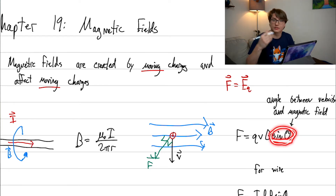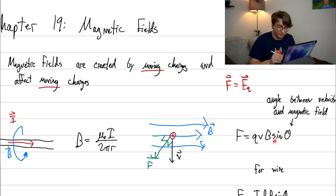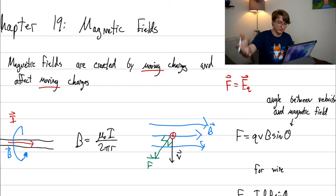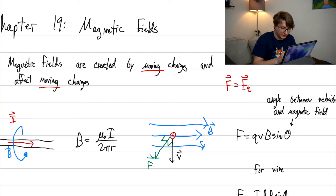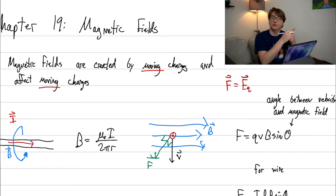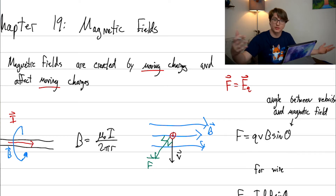To figure out which perpendicular direction, we use the right-hand rule. As for strength, we add a sinθ factor. Sine is maximum at 90°, so if the velocity and magnetic field are perpendicular, the force is at a maximum. If the velocity and magnetic field point in the same direction, sinθ = 0, so there's no force at all — they have to be moving in at least slightly different directions for any force to exist.